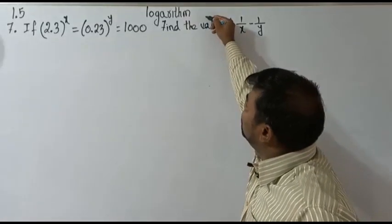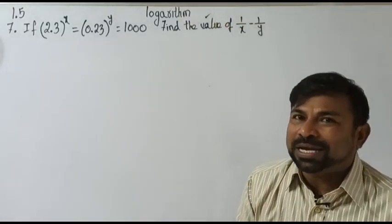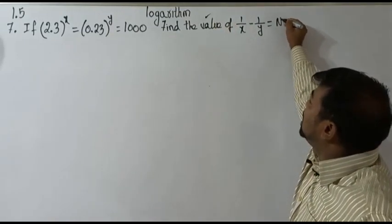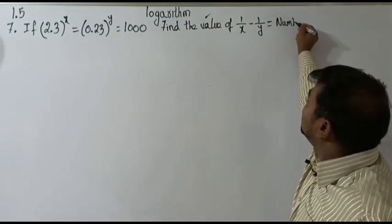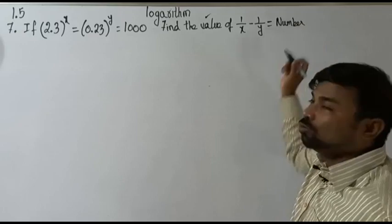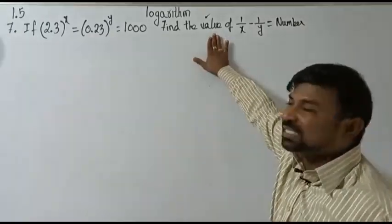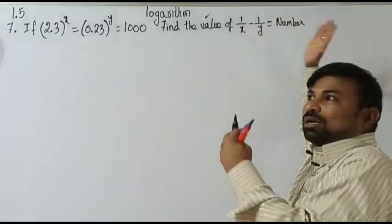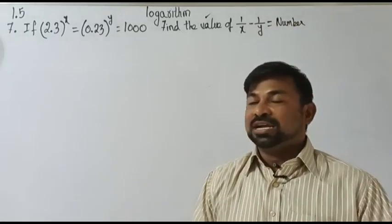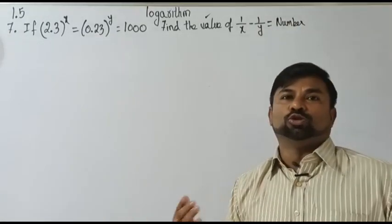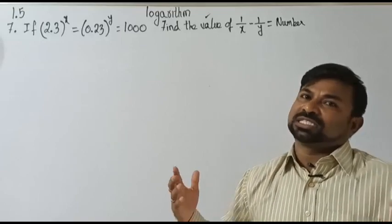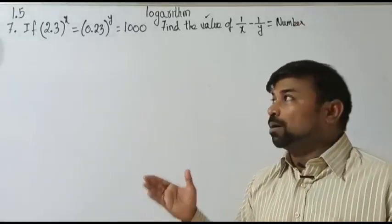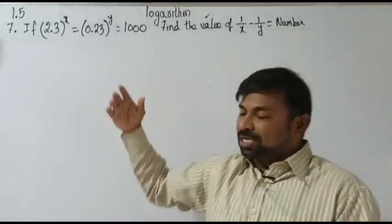When he is asking us to find the value, he is expecting an answer in terms of a number. So whenever he is asking for a 'value', remember — is it 7, is it 2, is it 2 by 3, or 7 by 5? Whatever it might be, he is asking about a number.